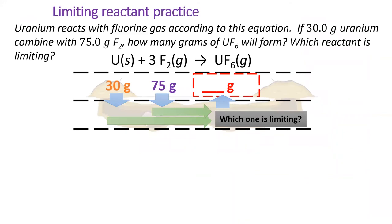Let's try it with a real chemistry problem. If 30 grams of uranium reacts with 75 grams of fluorine, according to the equation below, which reactant is limiting? To solve this,